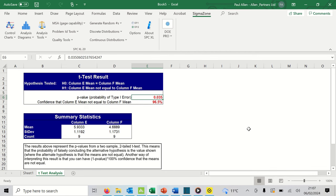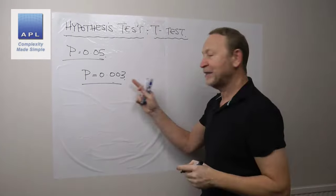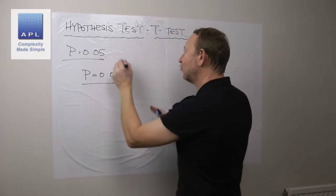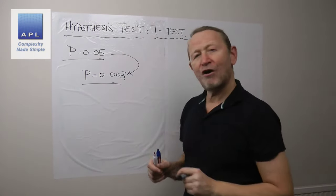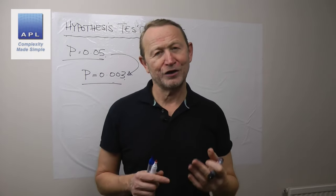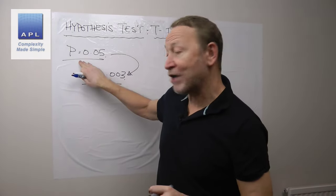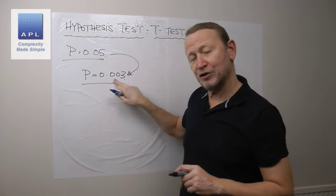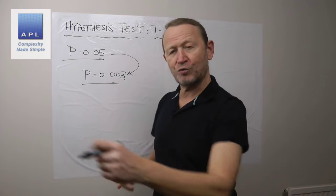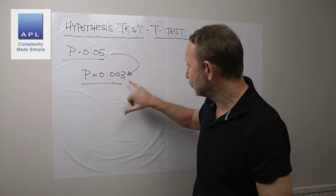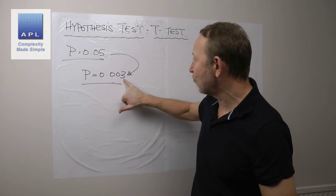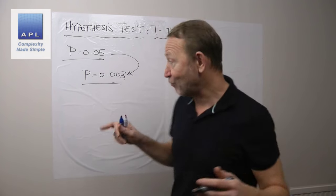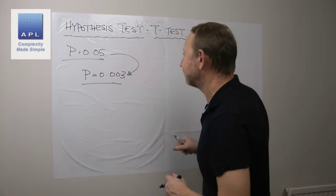So p equals 0.003. What's that telling us? I've gone below the hurdle rate. This p-value is your chance of being wrong if you conclude that switching the temperature made a difference. Your chance of being wrong is three in a thousand — that's the way I look at it.